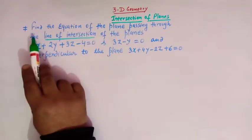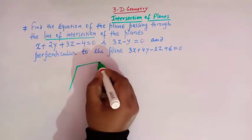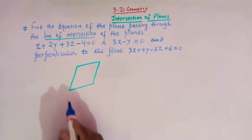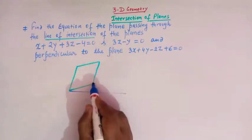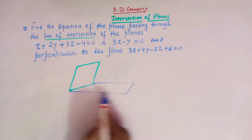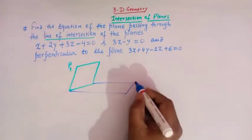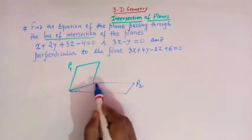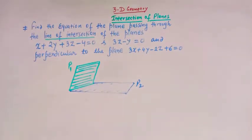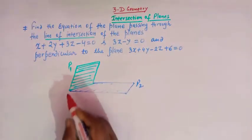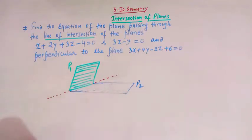We are given two planes. Suppose this is one plane and another plane like this. This is the plane P1 and this is plane P2. These are the rough diagrams showing the two planes P1 and P2.